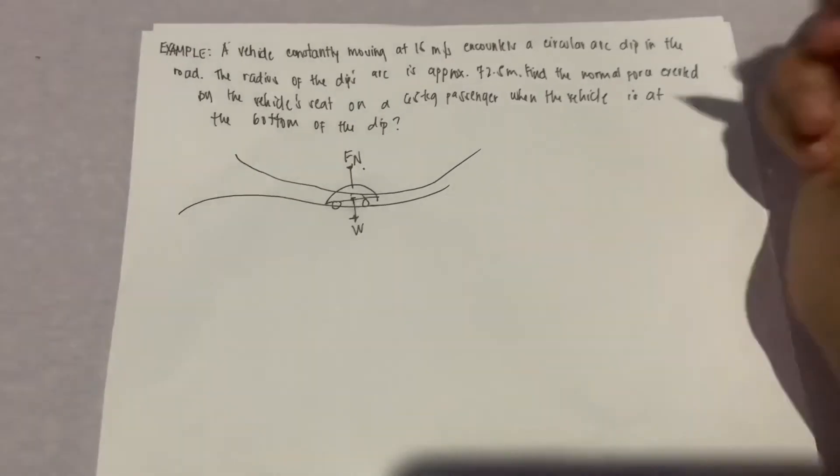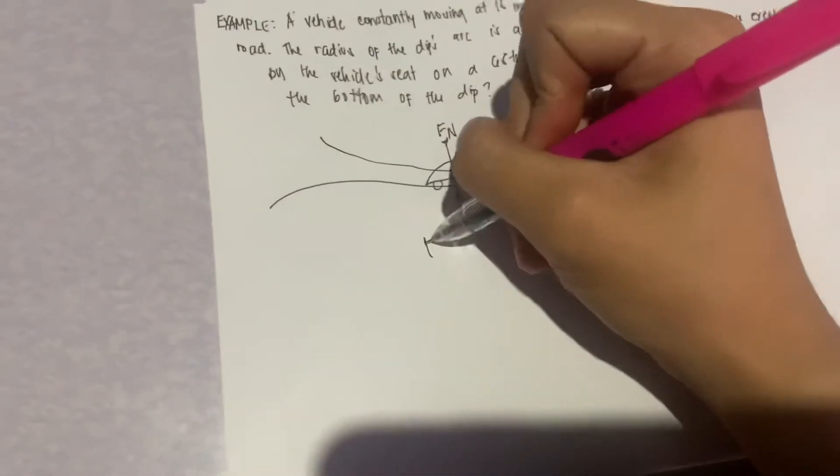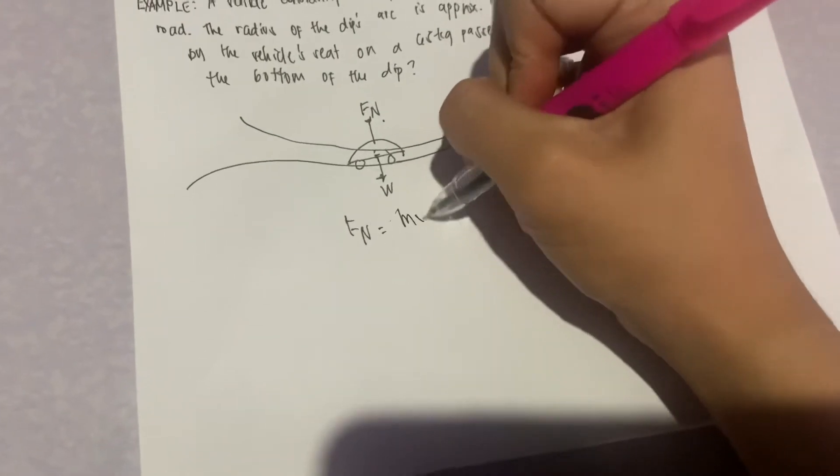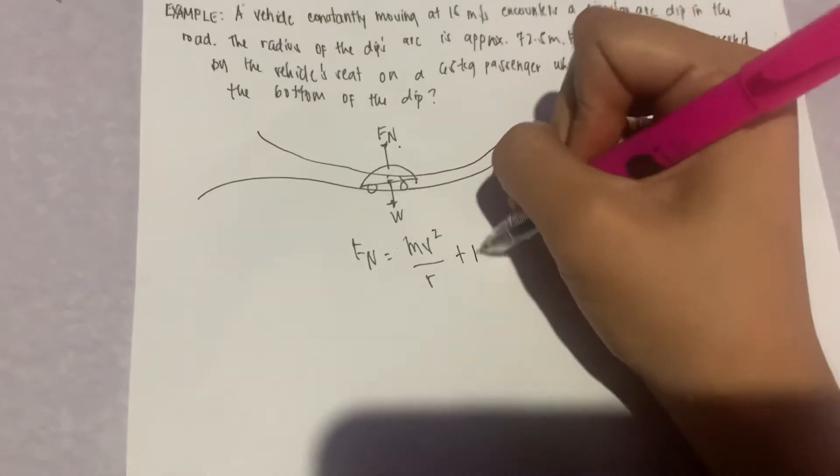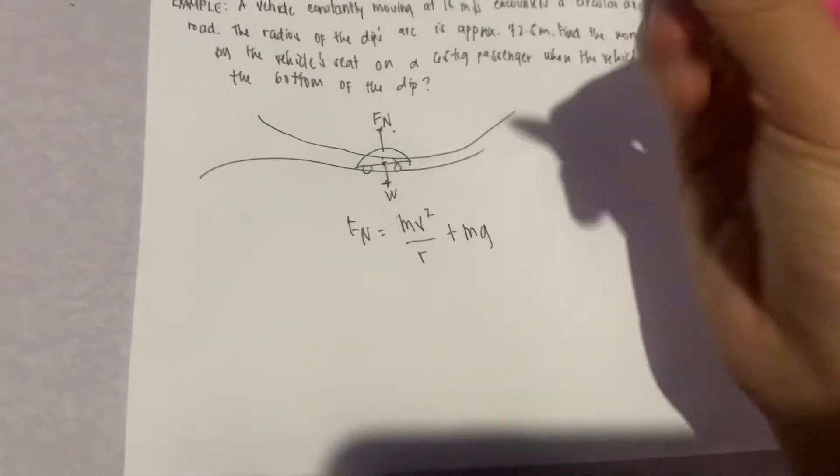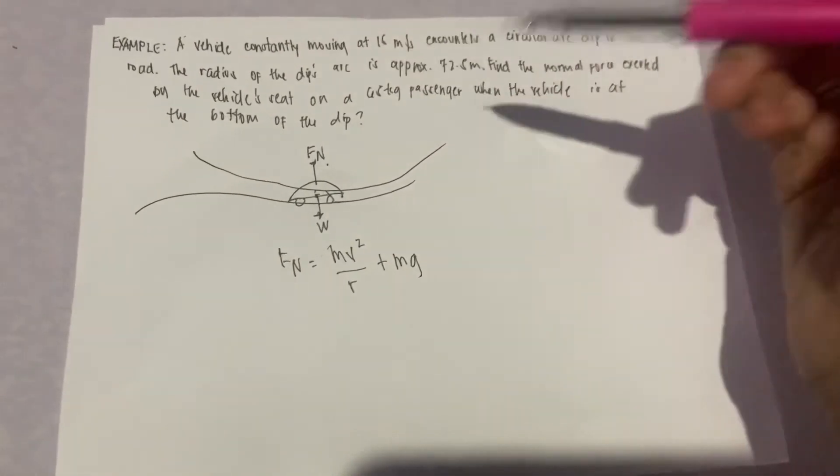So we have the formula for normal force: FN = mv² / r + mg. So ngayon, since andito na lahat,